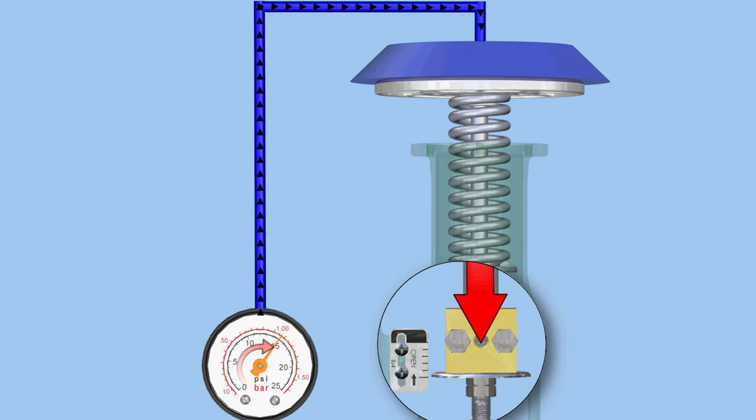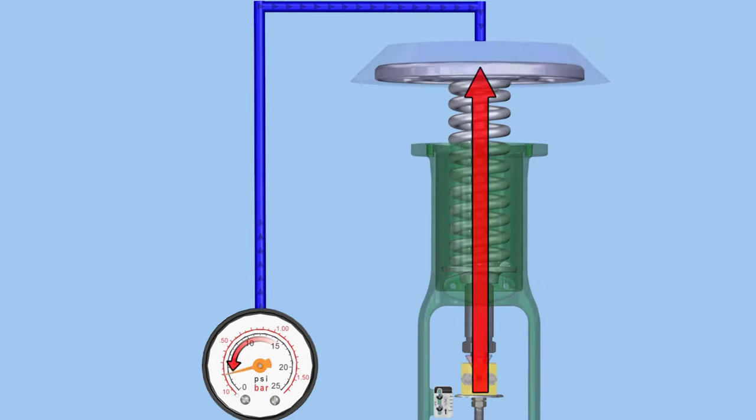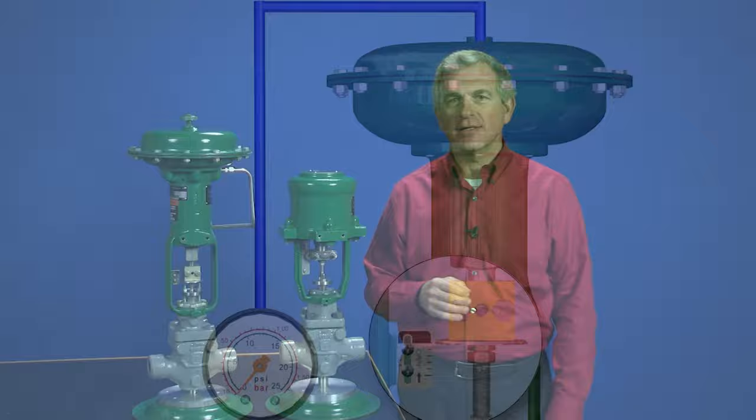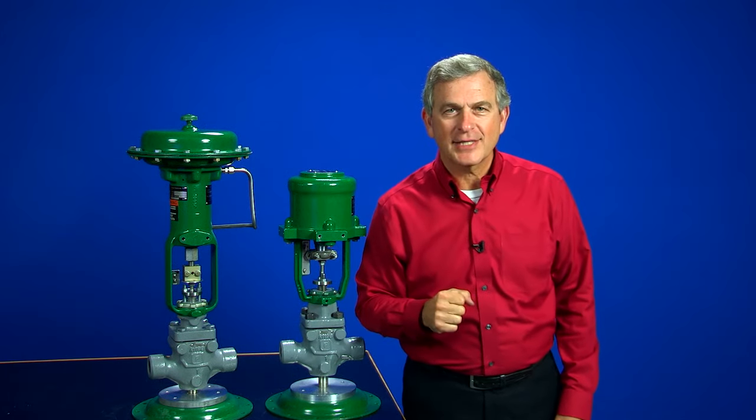Now if the pressure is decreased or lost, the spring will move the actuator stem in the opposite direction away from the valve body. Thanks for watching and I'll see you in the classroom.